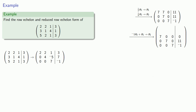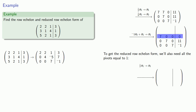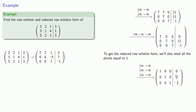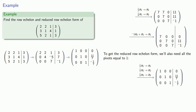Finally, to get this into reduced row echelon form, we'll want to make sure that all of the pivots are equal to 1. So we'll multiply the first row by one seventh, the second row by one seventh, and the third row also gets multiplied by one seventh. And we'll check: in every row, the leading entry is both above a column of zeros and below a column of zeros. So we've produced the reduced row echelon form of our original matrix.